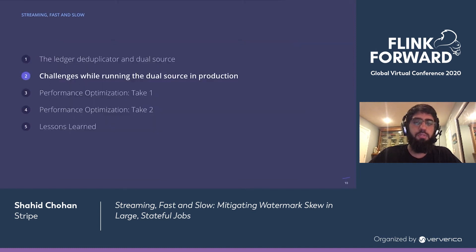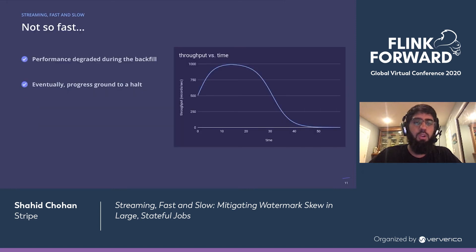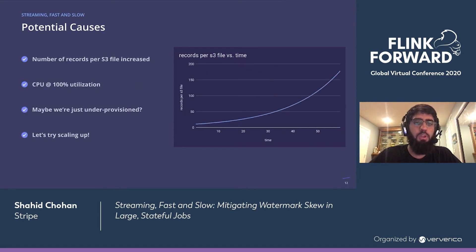Let's talk about challenges with the DualSource. When we first started the backfill, we saw decent performance for a little while. However, throughput would quickly plateau and then degrade during the backfill until we ground to a halt and stopped making any progress. On an initial inspection, we saw that the number of records per S3 file increased, which makes sense as we archive records in 15-minute segments, and we expect the size of these segments to increase as Stripe increased the number of records it processed over time.